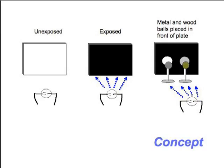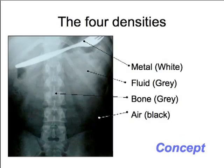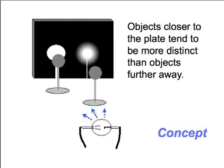So really what the x-ray does is distinguish between items of different densities. Here are the four densities: metal, fluid, bone, and air. The plate is of course black where nothing blocked the x-rays from hitting the plate. Another concept you should know is that items closer to the plate tend to be more distinct than items that are further away.